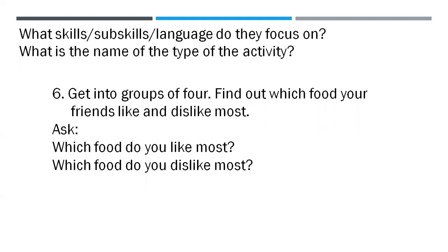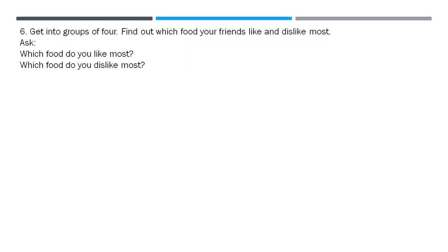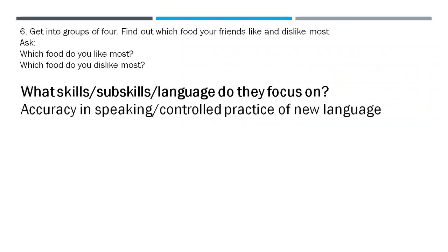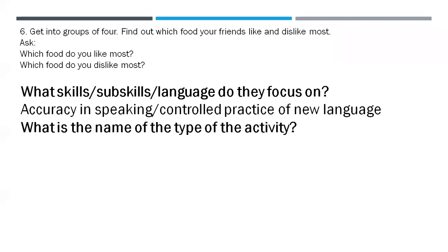On to number six: get into groups of four, find out which food your friends like and dislike most. Ask: which food do you like most? Which food do you dislike most? Here we have accuracy in speaking or controlled practice of new language, and that is a survey.